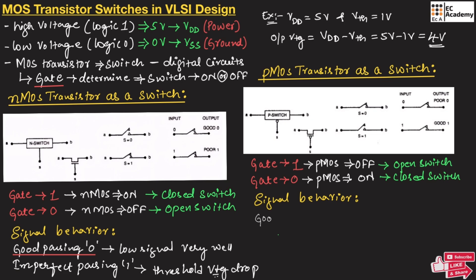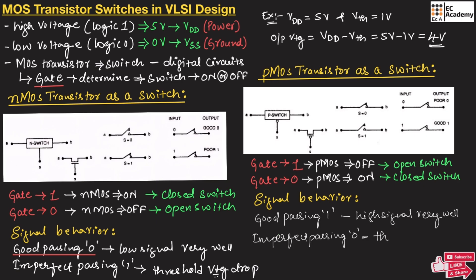PMOS has good passing for logic 1 — it passes the high signal very well — but has imperfect passing for logic 0 due to threshold voltage. So, to summarize: NMOS transistor has good passing for logic 0 and PMOS transistor has good passing for logic 1. Individually, they have limitations: NMOS has imperfect passing for logic 1, and PMOS has imperfect passing for logic 0.